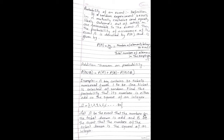Next definition: probability of an event. If a random experiment results in N mutually exclusive and equally likely outcomes, out of which M are favorable to the event A, then the probability of occurrence of event A is denoted by P(A) and is given by P(A) = M upon N, which can be written as the number of elements belonging to event A divided by the total number of elements in the sample space omega.